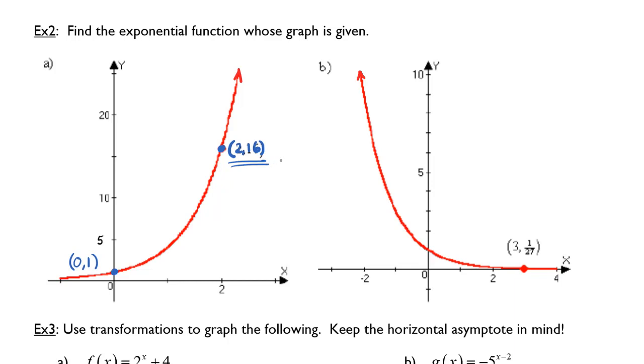Using this second coordinate point, 2, 16, I'm going to substitute values into the formula for the generic exponential function, y equals b to the x. Because it appears it has not been shifted up or down, and it has not been scaled by a.